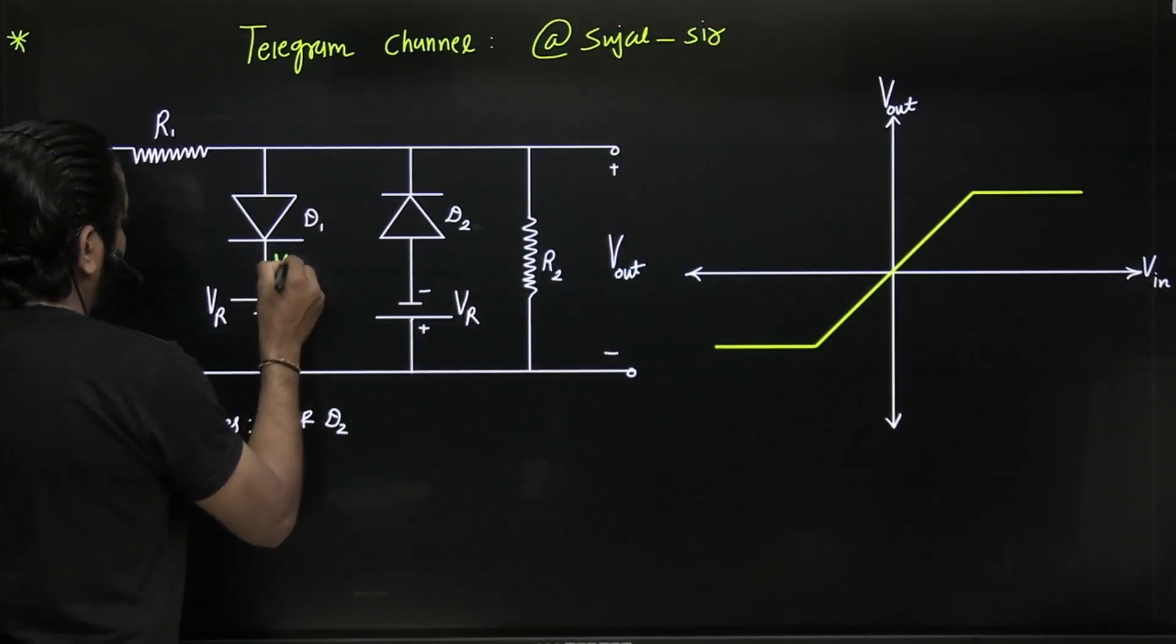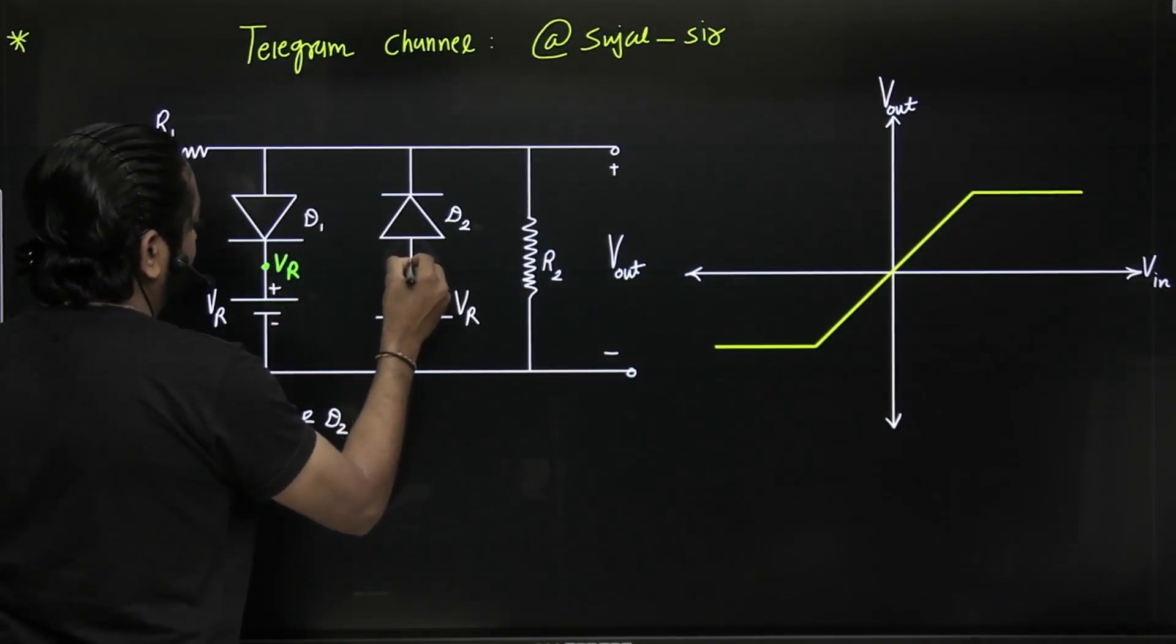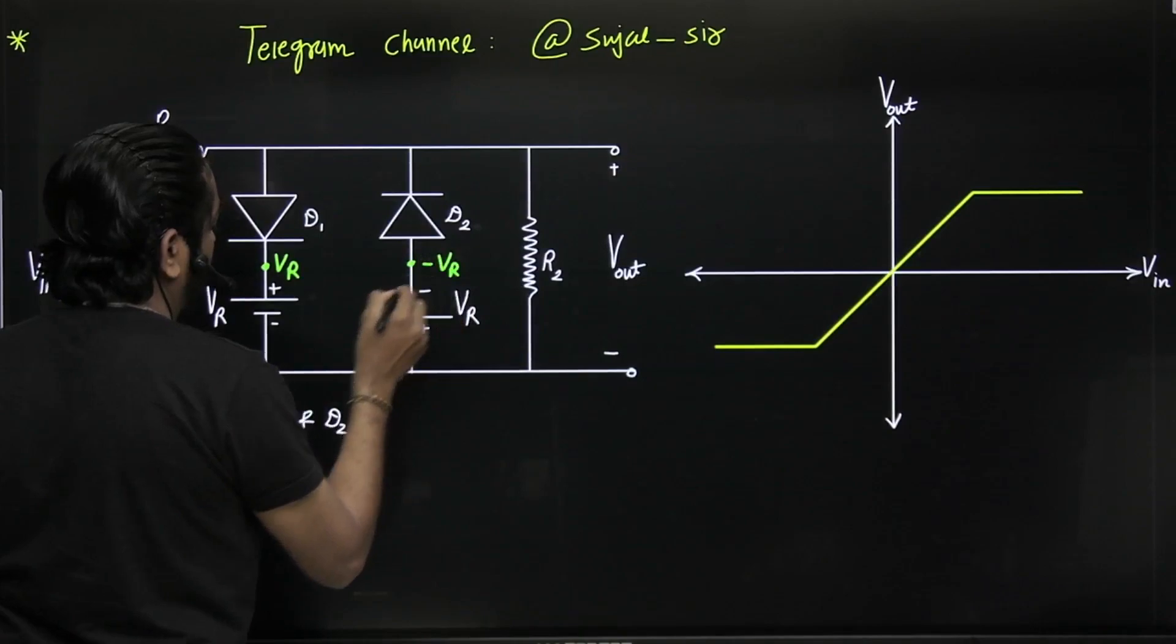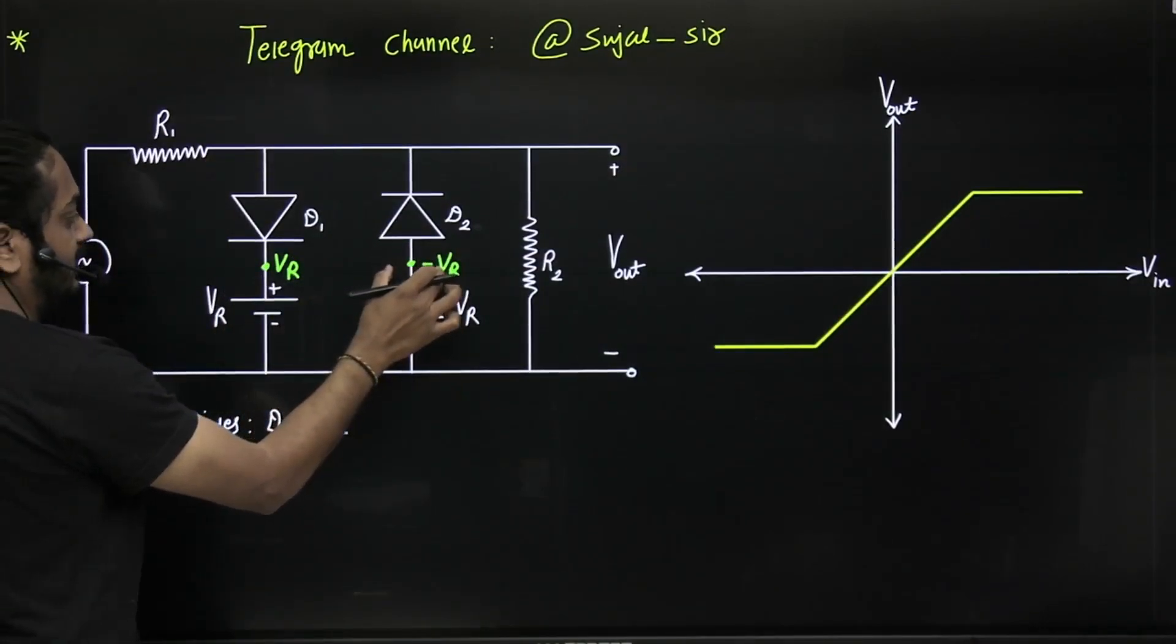See here, you have to mark VR and here this is minus VR. Of course this should be greater than this.